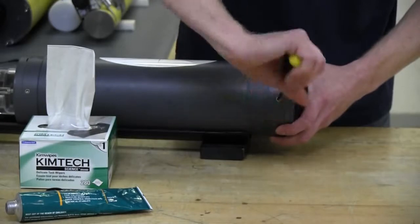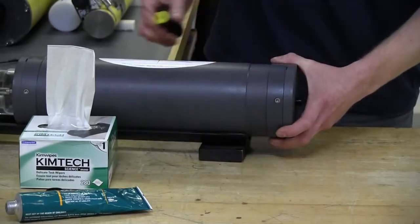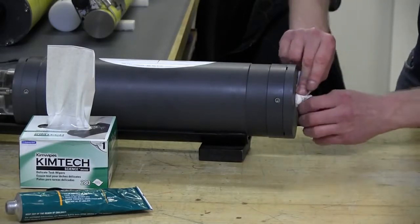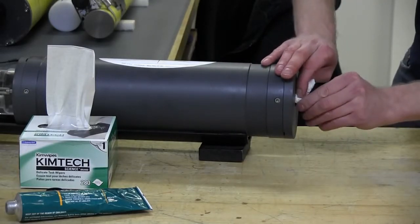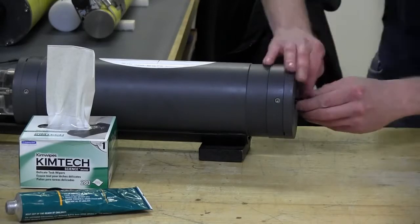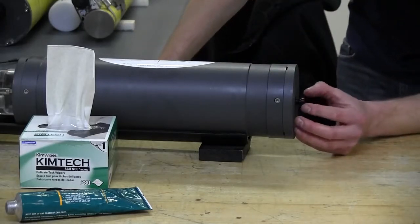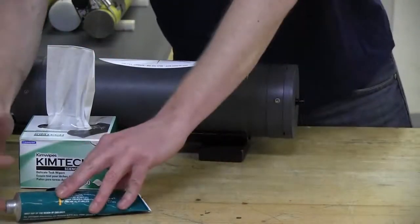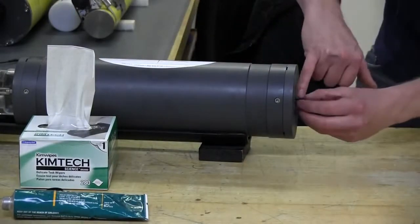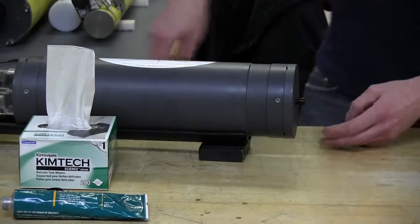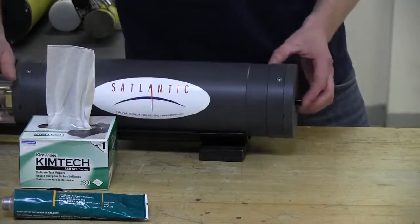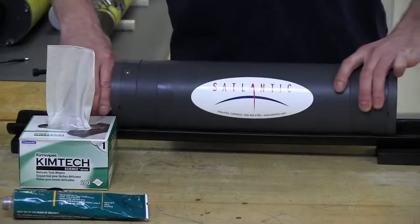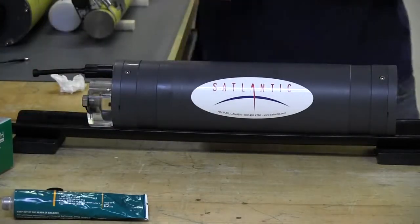Our last and final step is going to be the vent plug itself. The vent plug does have an O-ring, so just give it a quick clean with your lint-free wipes and double check that there isn't anything in there, no debris. This looks pretty good. Just apply a little bit of O-ring grease, nice thin film, and pop it into place. Make sure it's flush with the end cap. There you have it. We've just installed a new battery for the Satlantic CFET.